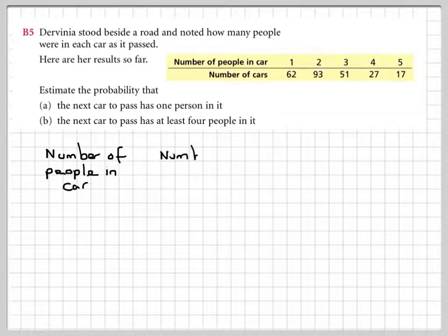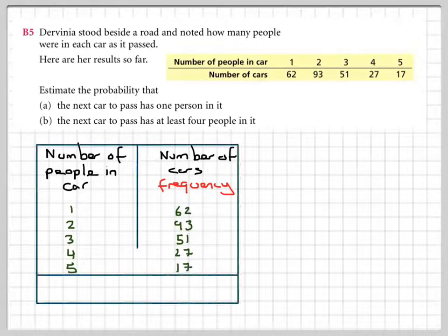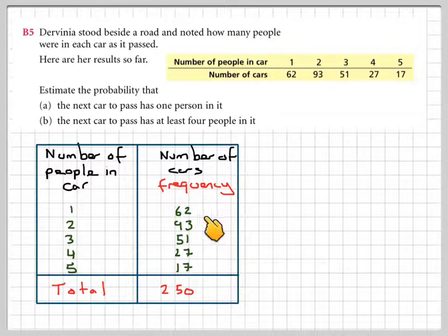So we reproduce the table in columns. We've got the number of people in a car and the number of cars. The number of cars is actually called frequency. What we need to do is add up the total number of frequencies so we know the total number of cars. So that adds up to 250 when we add these numbers together.